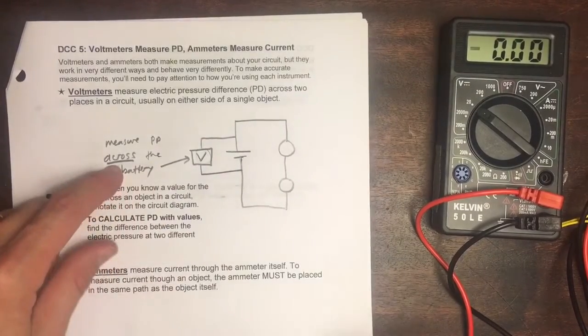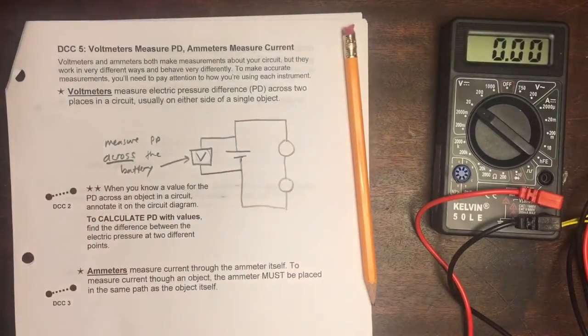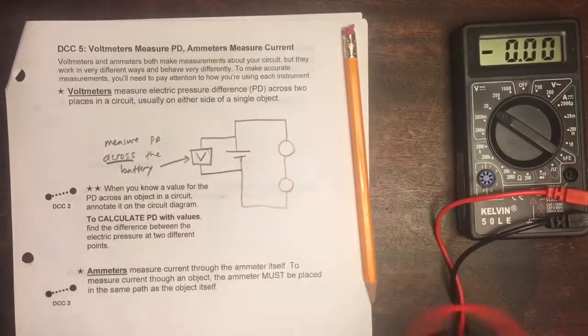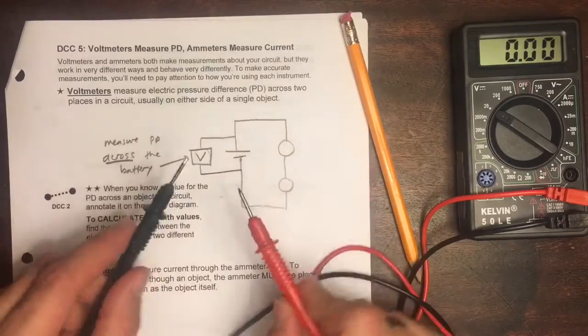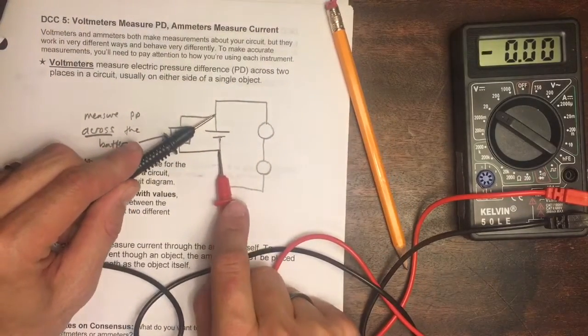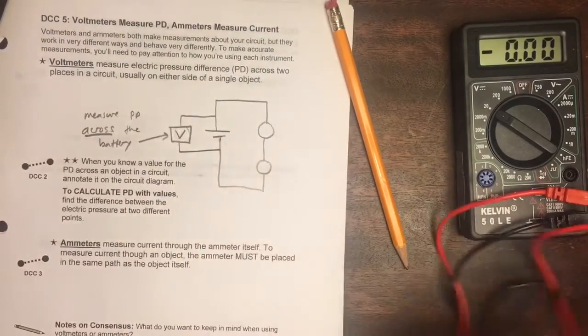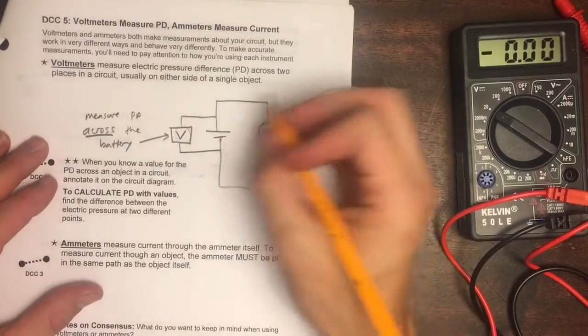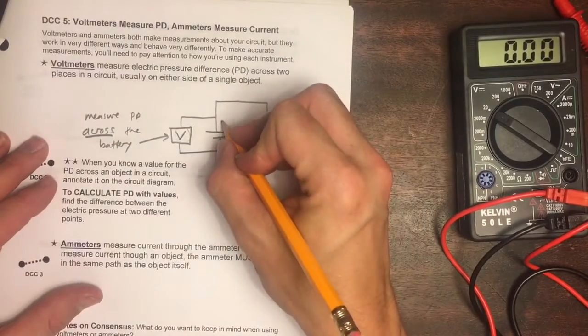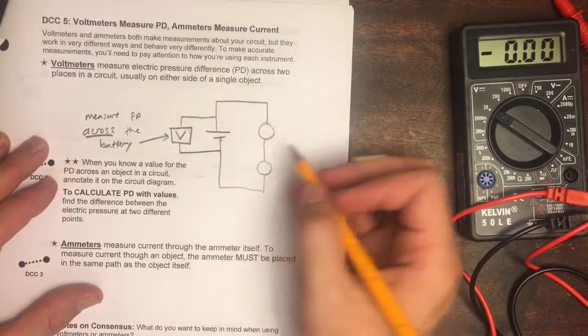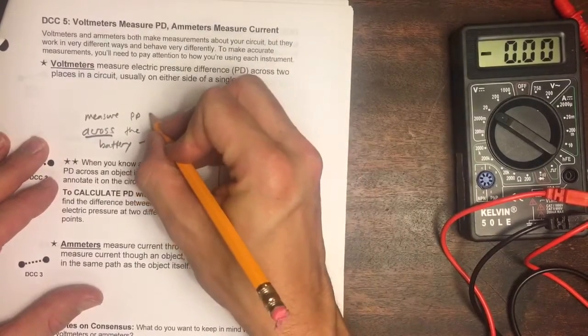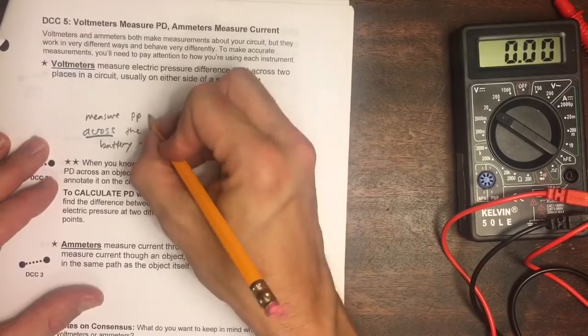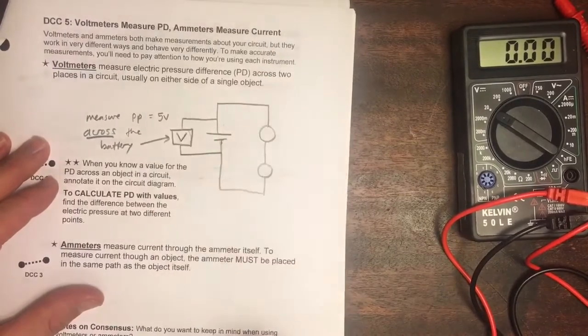This word 'across' here is very important because it shows how the voltmeter actually works. We are actually putting these two leads across both sides of the battery. And let's just say for the sake of argument that we measured this, let's say the voltmeter reads five volts.